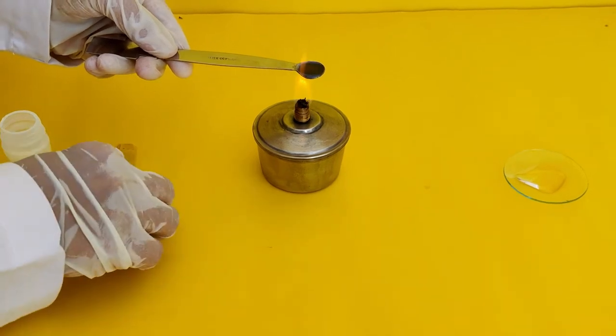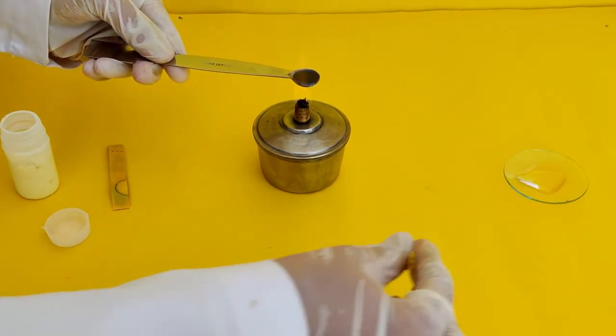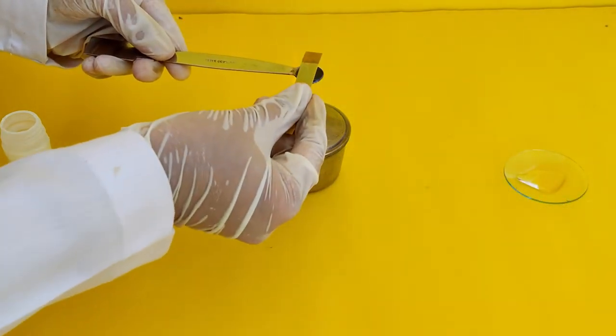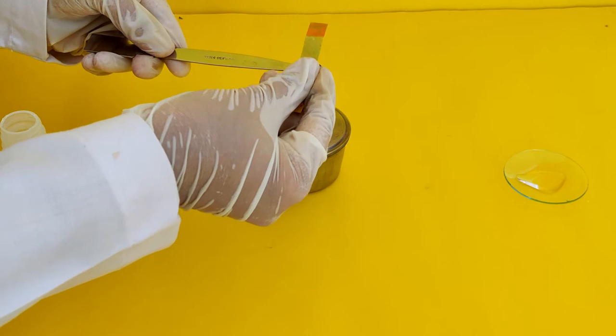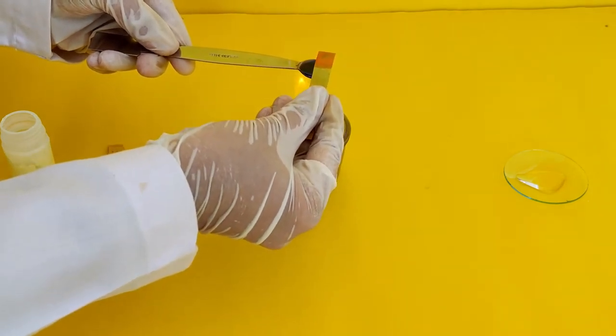Take a pH leaf and wet it slightly with water. Hold the pH paper over the spatula. Be careful not to take the pH paper very close to the spatula.